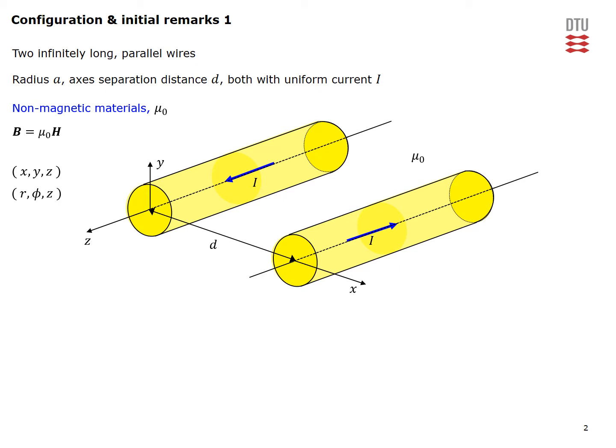One is called internal inductance and the other one is called external inductance. The internal inductance is essentially due to the magnetic field interior to our two wires.